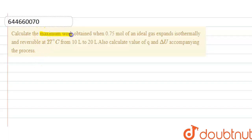Calculate the maximum work obtained when 0.75 mole of an ideal gas expands isothermally and reversibly at 27 degrees Celsius from 10 liter to 20 liter. Also calculate the value of heat exchange and delta U, that is internal energy, accompanying the process.